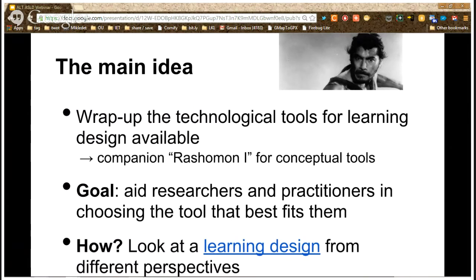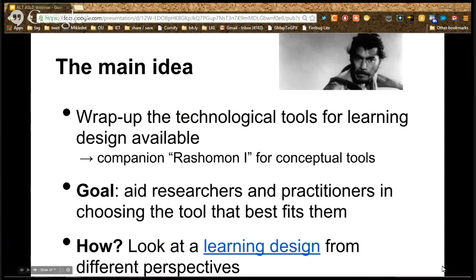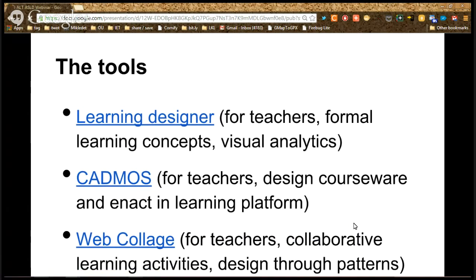What we did was model the same healthy eating scenario used in the Rashomon I paper. We asked each team that developed or proposed each tool to model the scenario, identify difficulties, and then we analysed the differences and commonalities among the different output models produced by this modelling exercise.